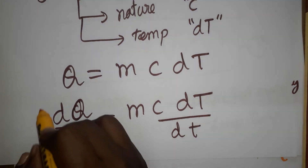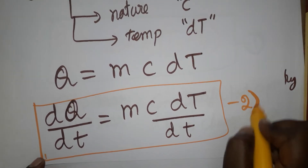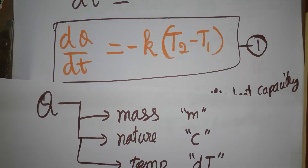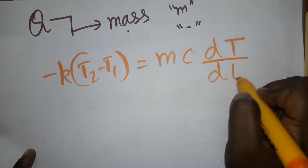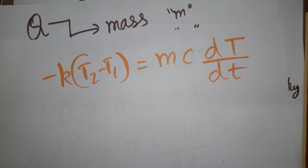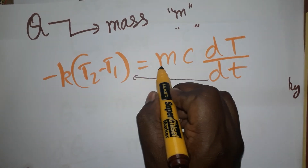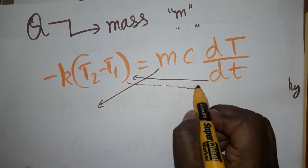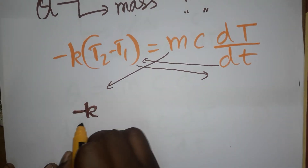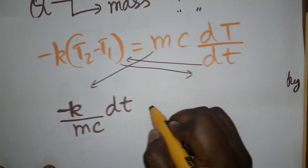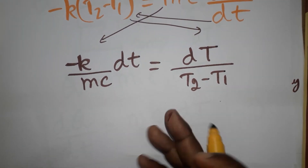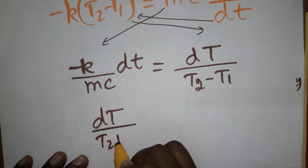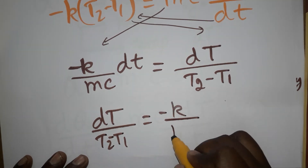This is equation number two. Now I equate equation one and equation two: minus k(T2 minus T1) equals m·c·(dT/dt). Rearranging, I bring dT to one side and m·c to the denominator, giving: dT divided by (T2 minus T1) equals minus k divided by m·c, times dt.